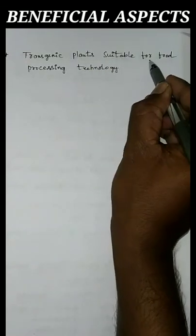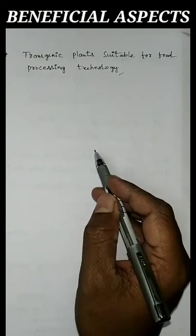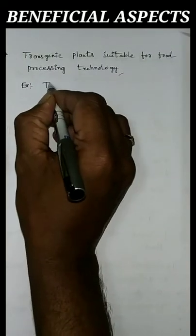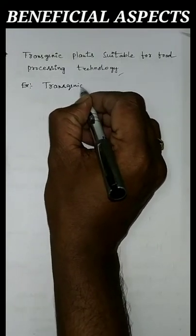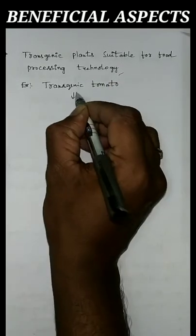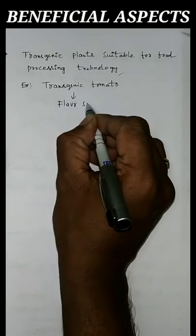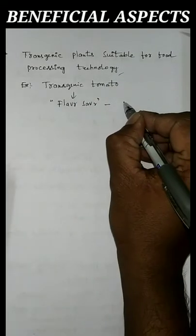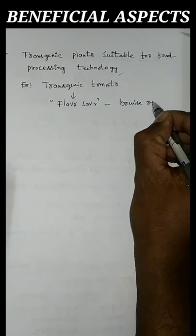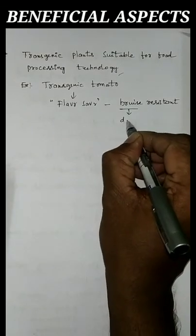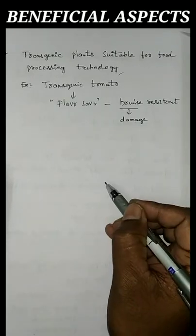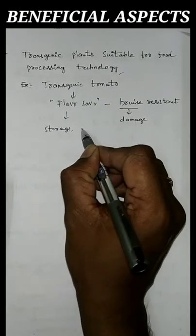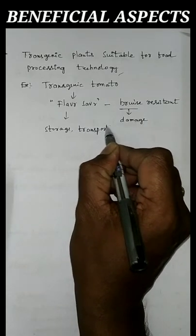Next, transgenic plants suitable for food processing technology. An example is transgenic tomato named as Flavr Savr. This Flavr Savr is bruise resistant, meaning it is resistant against damage. So this Flavr Savr is suitable for storage as well as transport.